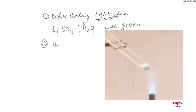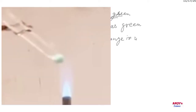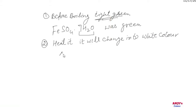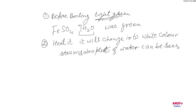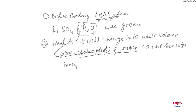When we heat it, the green color will change into white. Steam droplets of water can be seen on the inner surface of the test tube. This is because of the seven water molecules being released on heating.